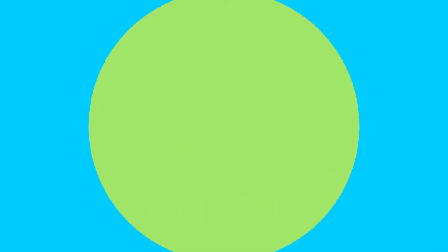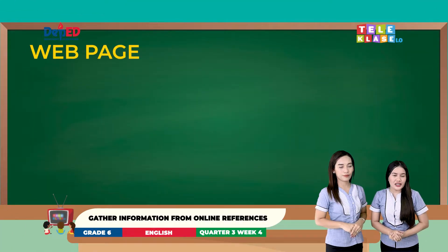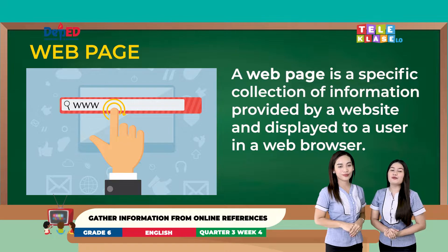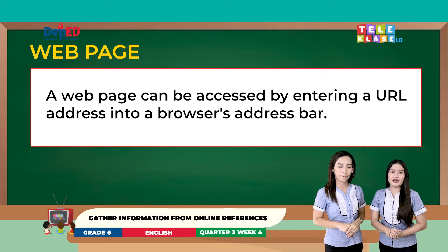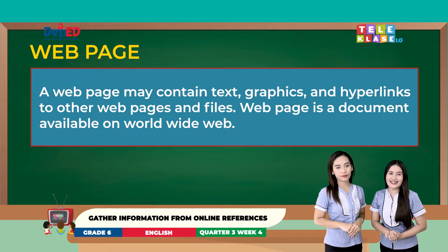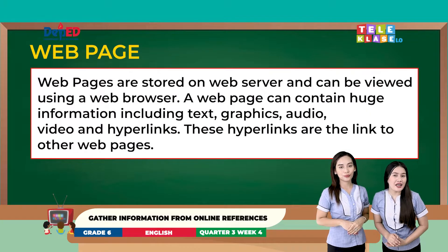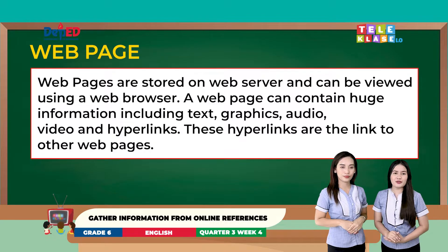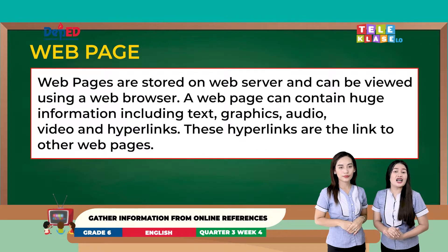How about web page and website? A web page is a specific collection of information provided by a website and displayed to a user in a web browser. It can be accessed by entering a URL address into a browser's address bar. A web page may contain text, graphics, and hyperlinks to other web pages and files. It is a document available on the world wide web, stored on a web server. These can contain huge information including text, graphics, audio, video, and hyperlinks.